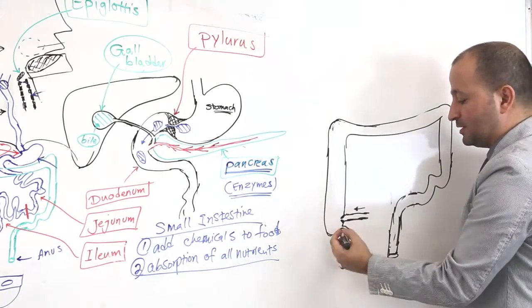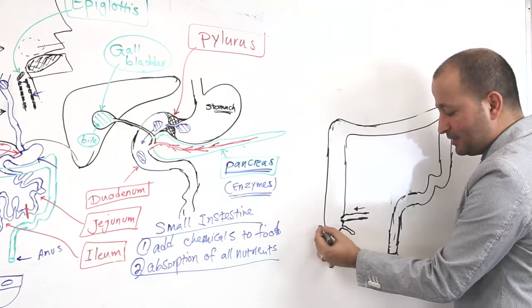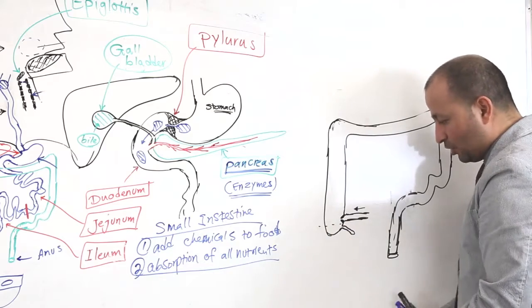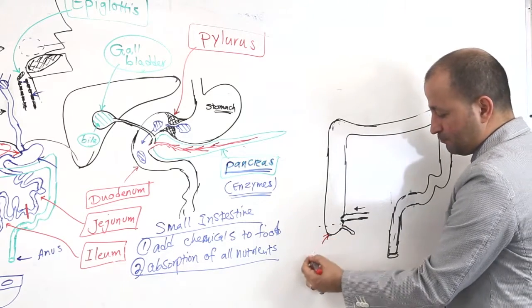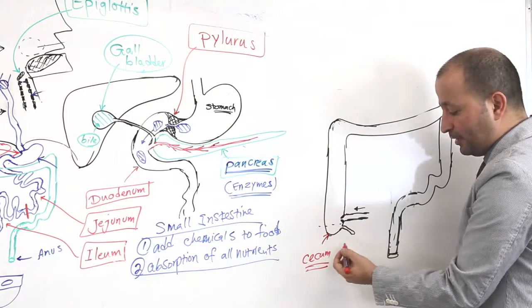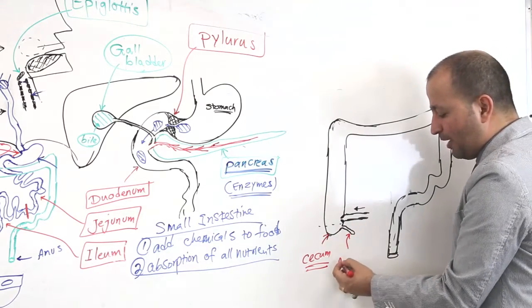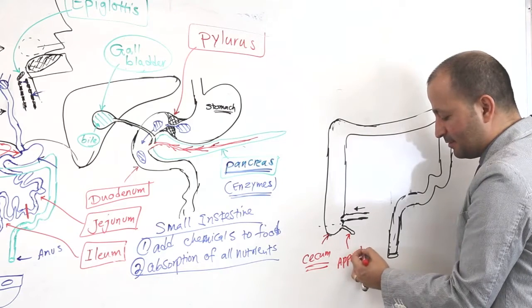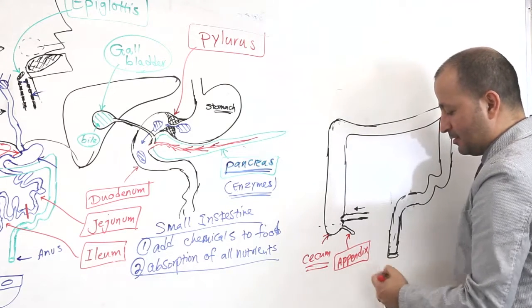So what are the parts of large intestine? There is one little bag here, this little bag here, that is called cecum. Cecum. There's a little bag here. It's a dead end point. Connected to cecum, you have the famous appendix. Appendix.